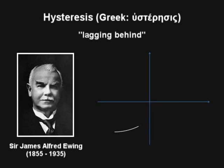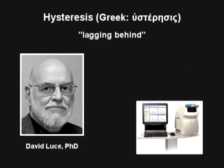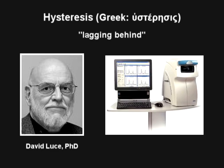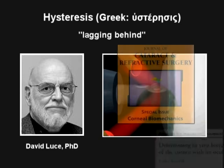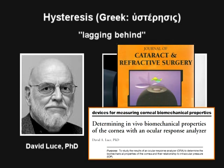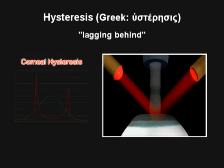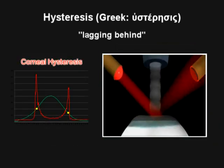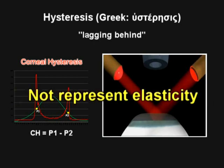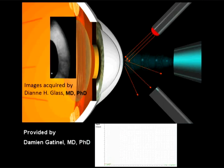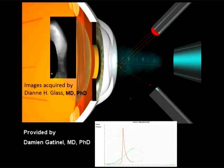Hysteresis was coined by Sir James Alfred Ewing, who studied magnetic materials. David Luce from Reichert developed the Ocular Response Analyzer, a modified non-contact tonometer that represents the first clinical tool for assessing in vivo corneal biomechanical properties. Corneal hysteresis represents the ability of the cornea to dissipate energy, or a measure of the viscous damping of corneal tissue. This is not stiffness and does not represent elasticity. These cartoon simulations provide an easy understanding of the dynamic bidirectional applanation process.